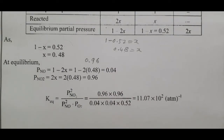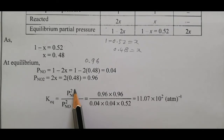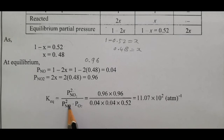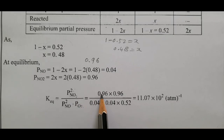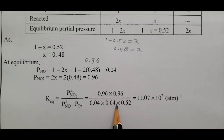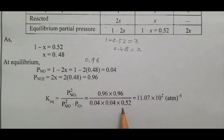Kp equals the partial pressure of NO₂ squared, divided by the partial pressure of NO squared into the partial pressure of O₂. So Kp = (0.96)² divided by (0.04)² × 0.52.